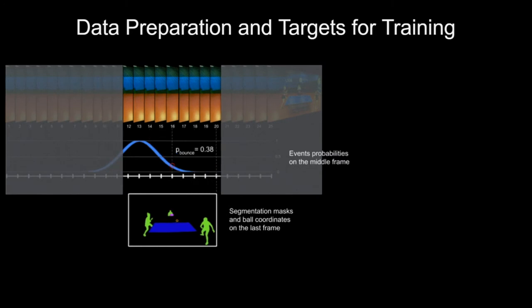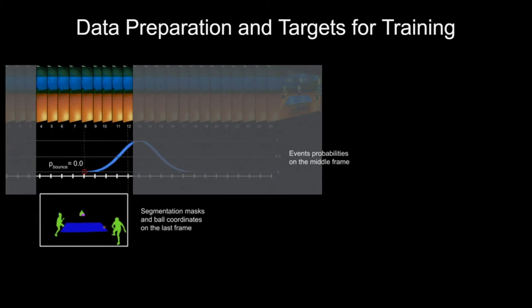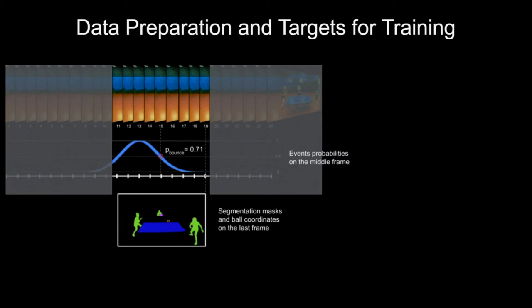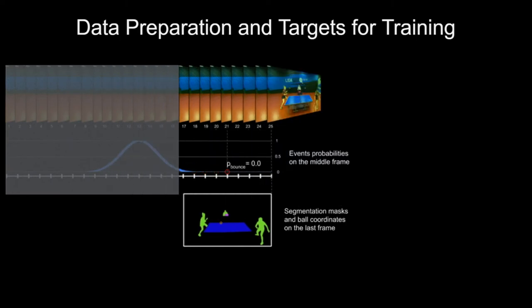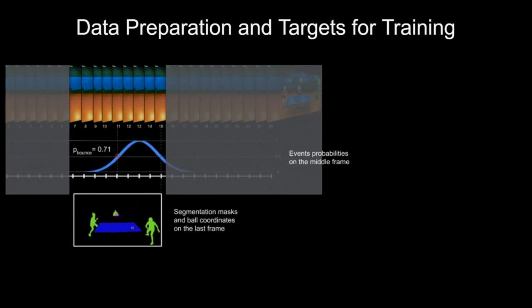A training sample is represented as a sequence of 25 video frames with a manually labeled event in the middle. The input tensors for training were randomly subsampled as 9 consequent frames with event spotting target for the middle one, and semantic masks and ball position for the last frame in a sample.